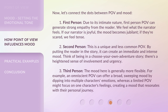Second, second person: this is a unique and less common POV. By putting the reader in the story, it can create an immediate and intense mood — think of being in a choose-your-own-adventure story. There's a heightened sense of involvement and urgency. Third, third person: the mood here is generally more flexible. An omniscient POV can offer a broad, sweeping mood by dipping into multiple characters' emotions, whereas a limited POV might focus on one character's feelings, creating a mood that resonates with their personal journey.